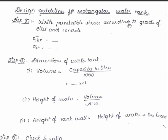Step 1 is to write the permissible stress constants according to the grade of steel and concrete. So sigma_cbc and sigma_st are needed here. Sigma_cbc can be taken from IS 456, sigma_st is from IS 3370.